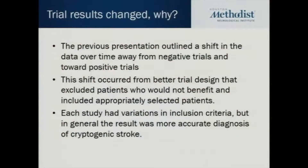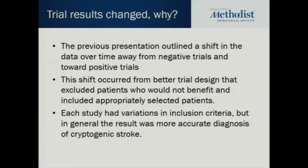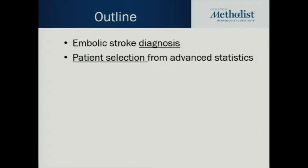The previous talk discussed a historical shift in the data away from negative trials toward positive trials, and as I illustrated, this occurred through better trial design. What it really reflected was appropriately selected patients — getting the right patient to the right therapy. These studies had variations in inclusion criteria, including different shunt sizes, but in general the result was a more accurate diagnosis of cryptogenic stroke. So we're going to talk about diagnosis and patient selection.